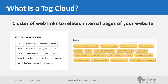In its simplest form, a tag cloud is a cluster of web links to related internal pages of your website. Most commonly you'll see a tag cloud either on an individual content page or on a search result page. The tags or keywords within this cluster will typically be related to whatever that page or search is regarding.